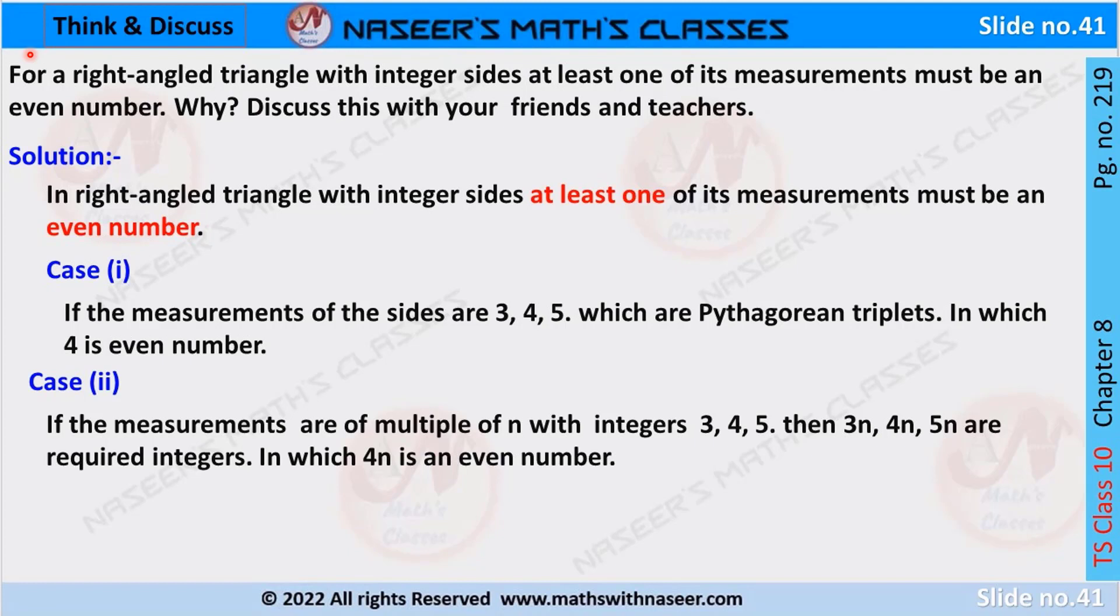Now we are going to discuss the Think & Discuss problem page number 219, chapter on similar triangles. In this one, it is given that for a right-angle triangle with integer sides, at least one of its measurements must be an even number. Why? Discuss with your friends and teachers.